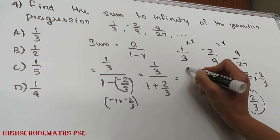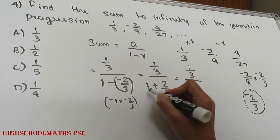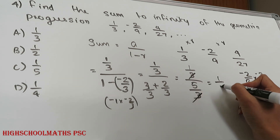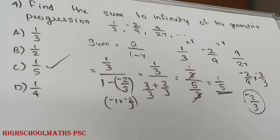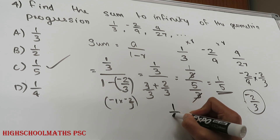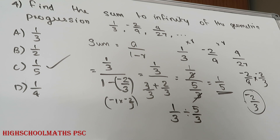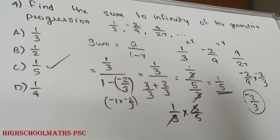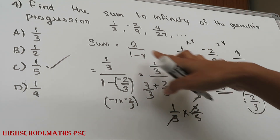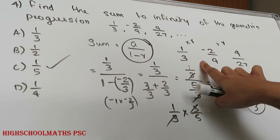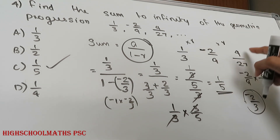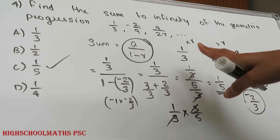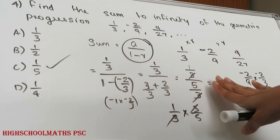The common denominator gives us 3/3 plus 2/3 which equals 5/3. So the sum equals 1/3 divided by 5/3. Dividing by 5/3 is the same as multiplying by 3/5, and the 3s cancel, giving 1/5. The answer is 1/5.